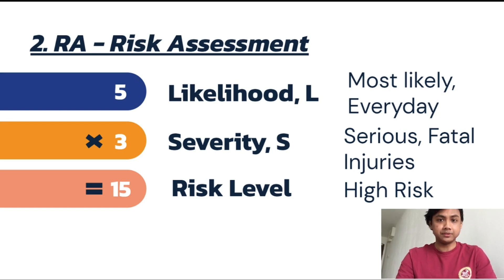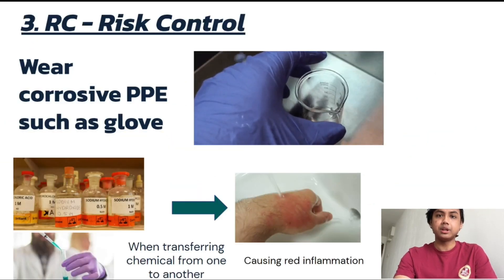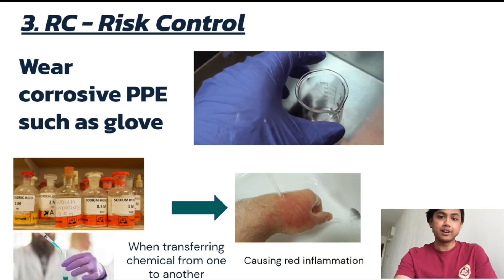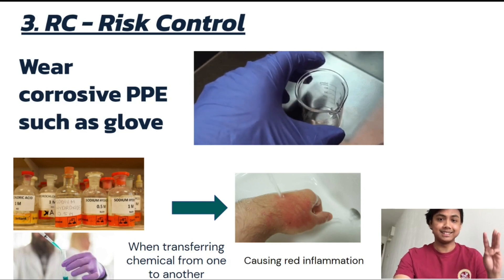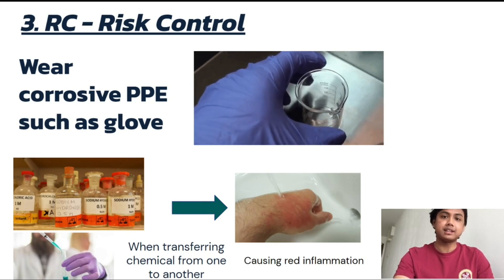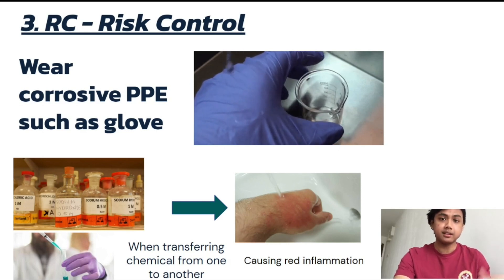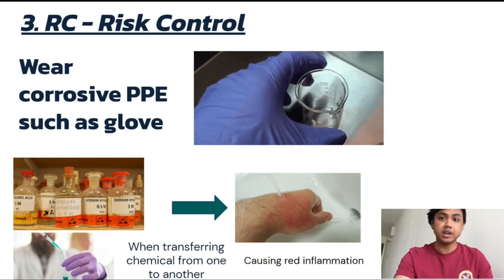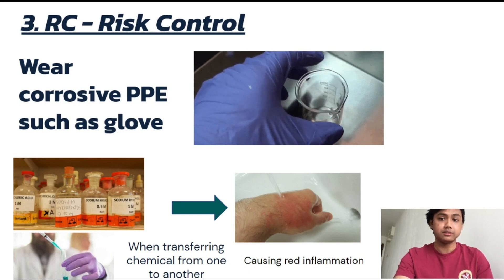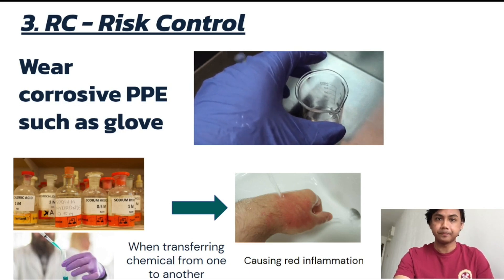The risk level is 15, because it can give you a lot of health problems. In order for us to control this, you can wear PPE such as gloves, because that is the least thing you could do to prevent the chemical from directly spilling onto your hand, which can cause great inflammation, and you don't want that to occur.